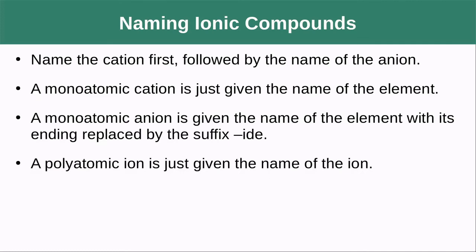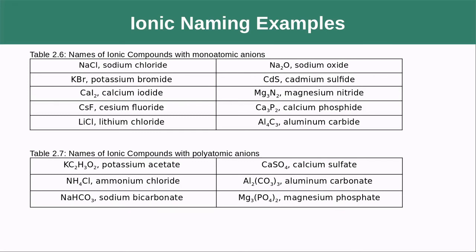When naming ionic compounds, name the cation first followed by the name of the anion. A monoatomic cation is given the name of the element. A monoatomic anion is given the element name with its ending replaced by the suffix '-ide'. So sodium and chlorine become sodium chloride, potassium and bromine become potassium bromide, and calcium and phosphorus become calcium phosphide.